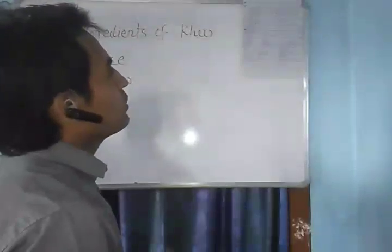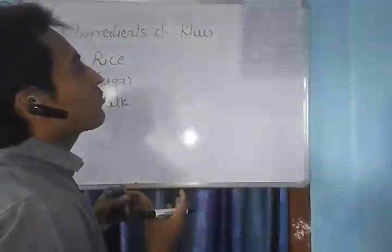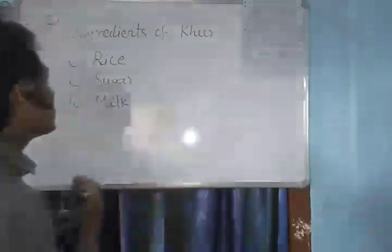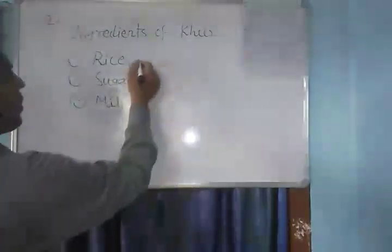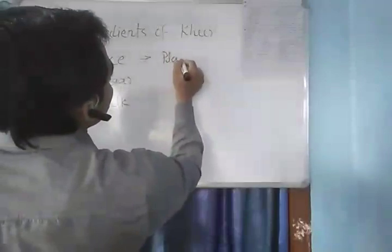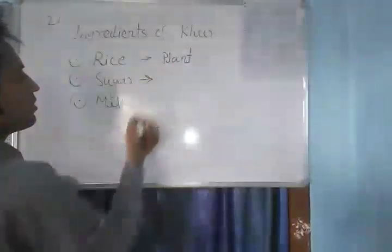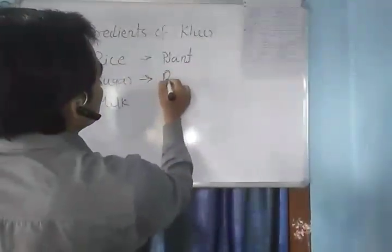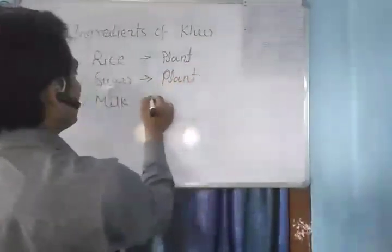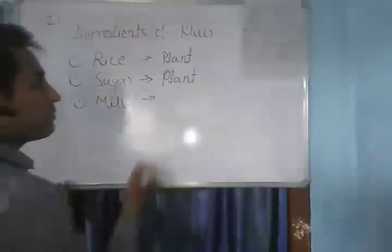The next part of question 21 asks which ingredients come from plants and which come from animals. Rice comes from plants. Sugar comes from sugarcane, which is a plant. Milk comes from animals.